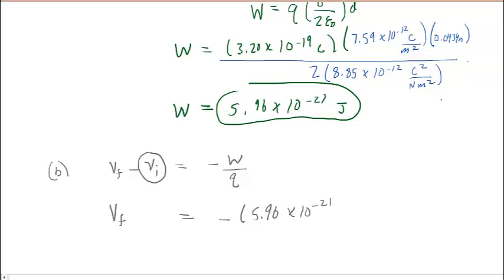Apparently, my toddler daughter agrees. And then we'll divide this by the charge, which again was given as 3.20 times 10 to the negative 19th coulombs.